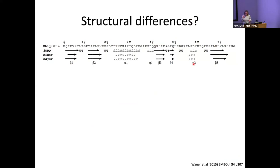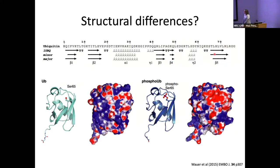We can encode torsion angle information from our triple resonance data, and we can see that the minor and major species have essentially the same overall architecture — maybe just a slight extension in the minor species of the C-terminal beta sheet. Toby was able to crystallize phosphorylated ubiquitin, and the crystal structure is almost identical to wild type, with just a big patch of negative charge from the phosphorylated serine. So the crystal structure wasn't really telling us about this minor species.